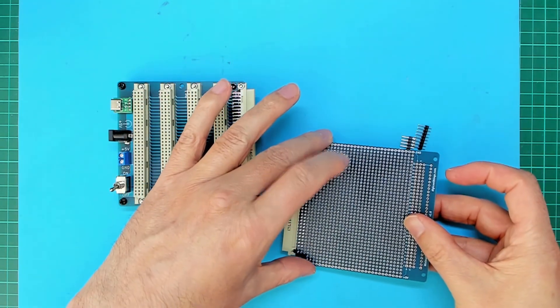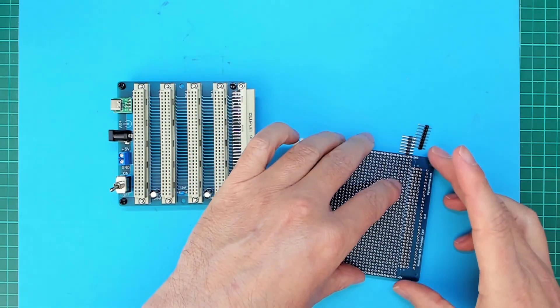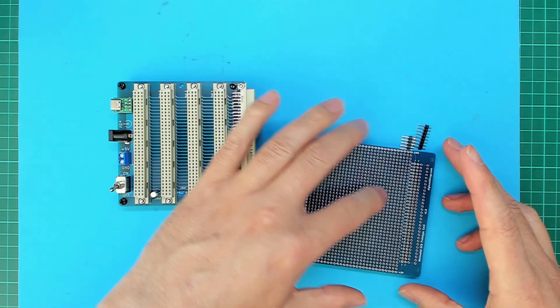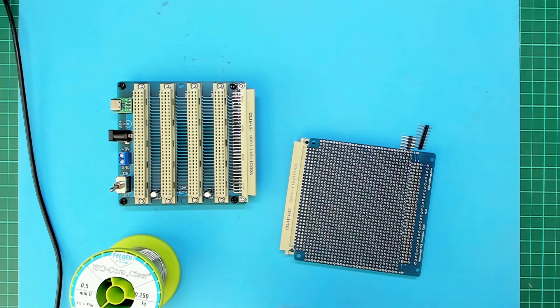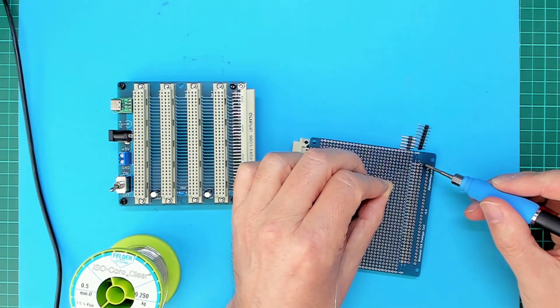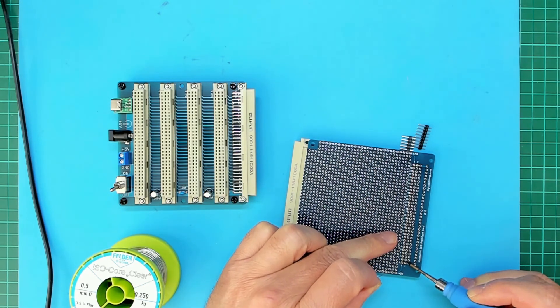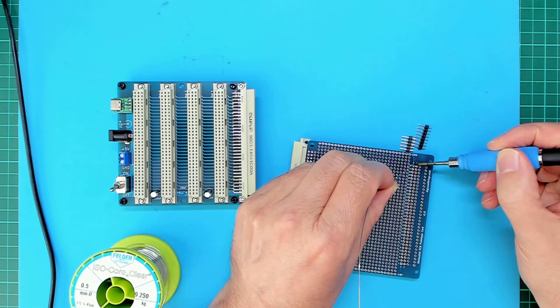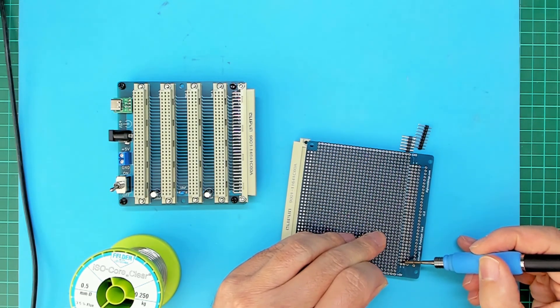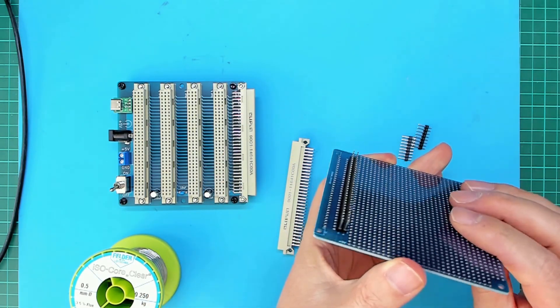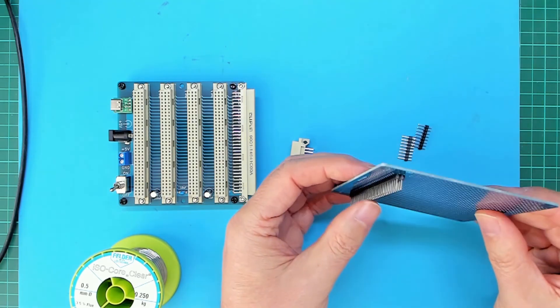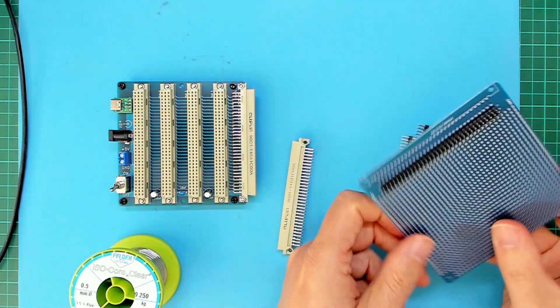Right, let's get those tacked in place. I'll just stand the other end up to get it at the right angle. Grab my soldering iron. And they look reasonably straight. So let's get them soldered in place.